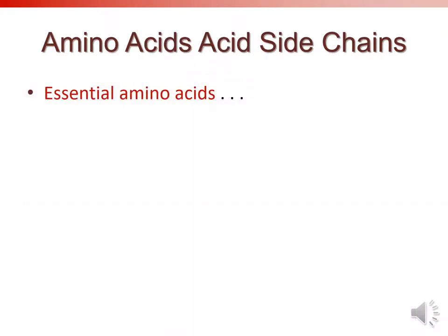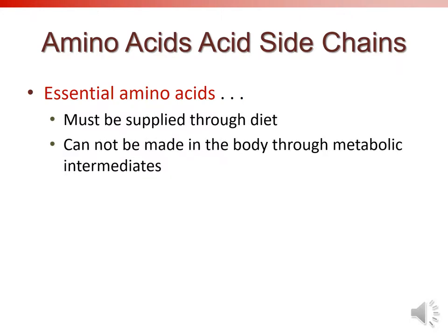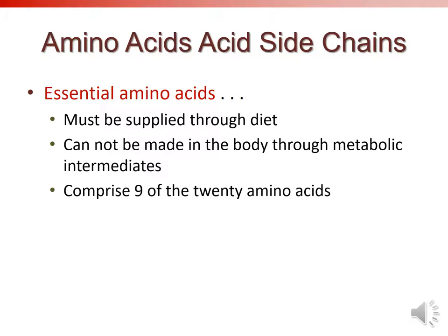Essential amino acids must be supplied through diet because the liver cannot make them from other metabolic intermediates — the same concept we saw with essential fatty acids. Nine of the 20 amino acids are essential. You don't need to memorize which nine; just know what an essential amino acid is and that they exist.